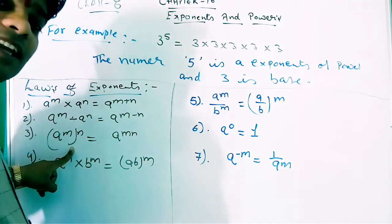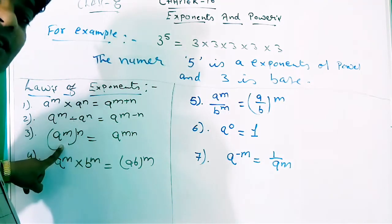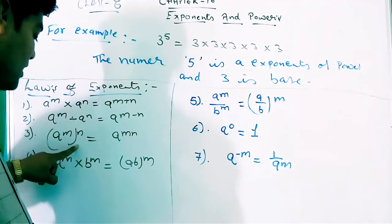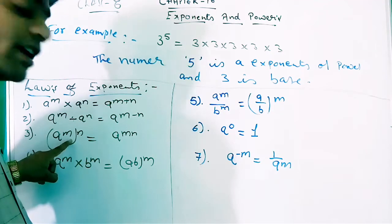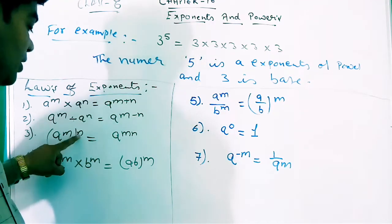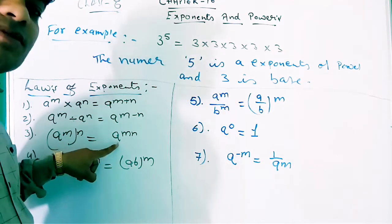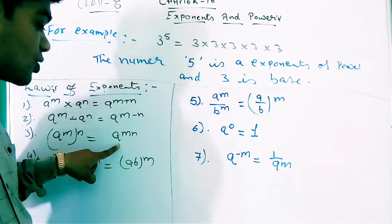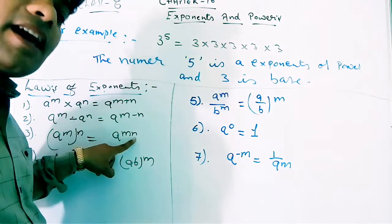Third law: when our base is single and powers have a product — this bracket means m into n — it becomes the base raised to m multiplied by n.